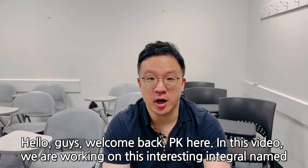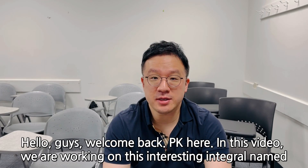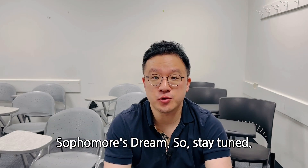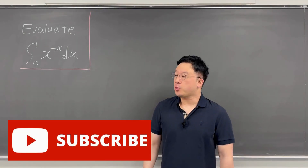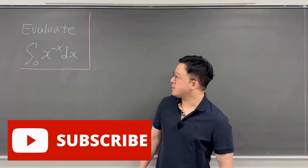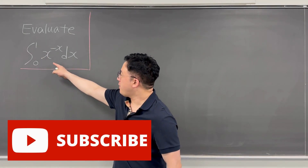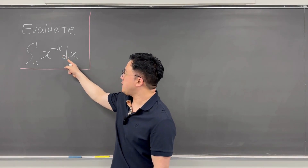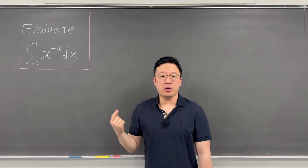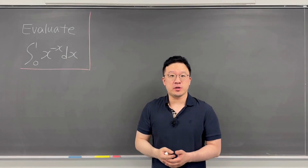Hello guys, welcome back, PK here. So in this video, we're going to be working on this interesting integral named sophomore's dream. Here's the question: the value of the integral from zero to one of x to the power of negative x, dx. We call this the sophomore's dream.